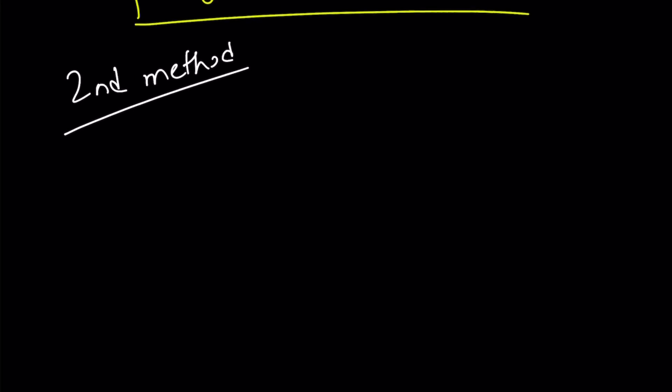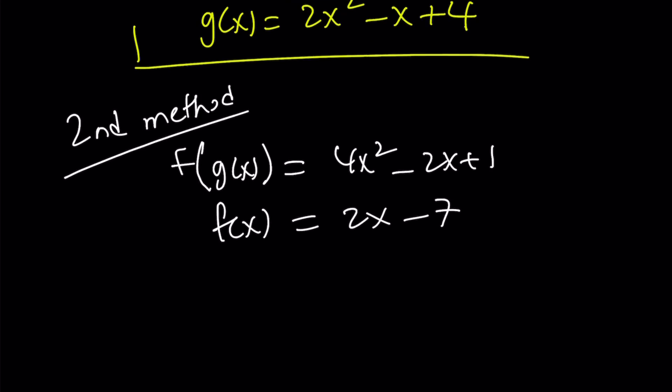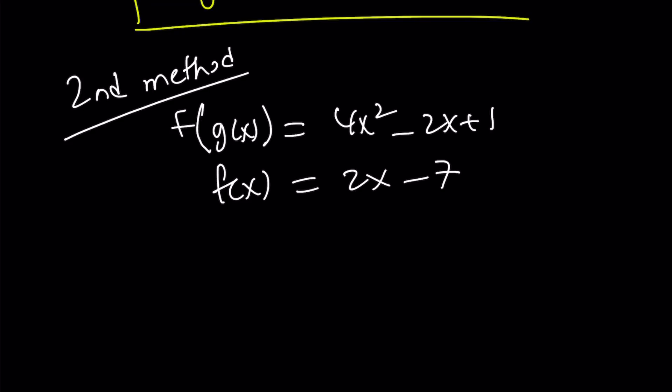My second method, let me rewrite the problem. We have f of g of x equals 4x squared minus 2x plus 1, and we have f of x equals 2x minus 7. Since I'm given a definition for f, I can directly apply it here. So f of x is 2 times x minus 7.